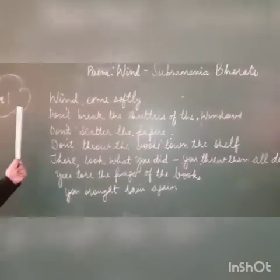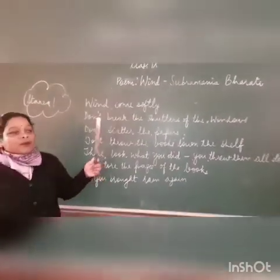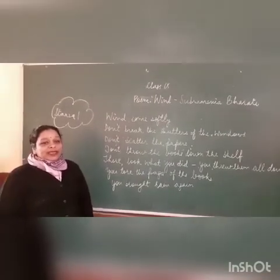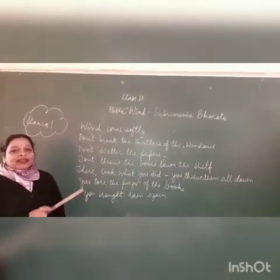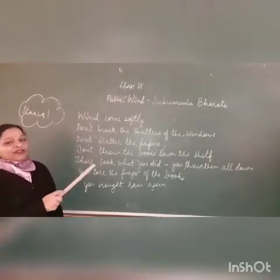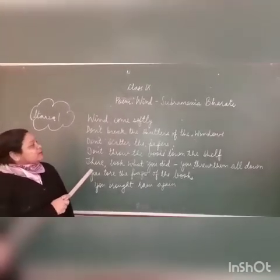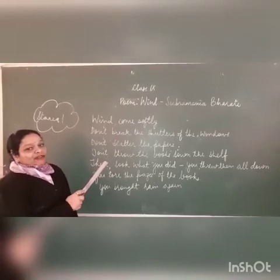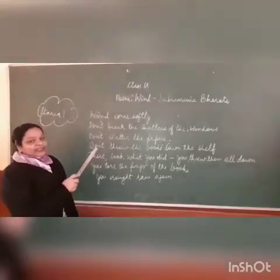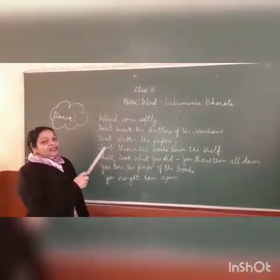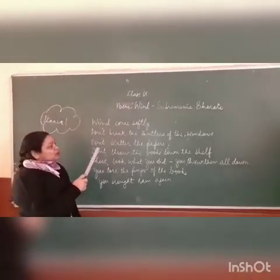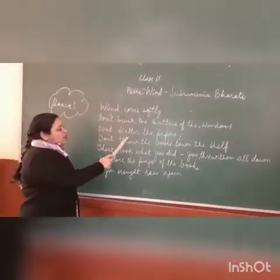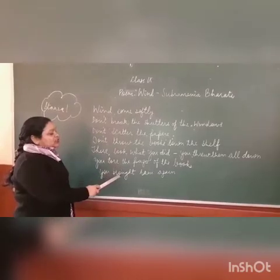So what is the tone of the poet here? The poet is instructing the wind. He is personifying the wind — the wind has been personified. He is requesting the wind to come softly, meaning it mustn't grow hard or fast. Don't break the shutters of the window. These are all the destructive aspects of the wind.